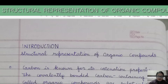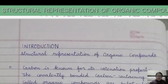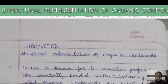As per schedule, we are going to start our next topic: structural representation of organic compounds. What are organic compounds, how to find hybridization of carbon atoms, and how to determine the number of sigma and pi bonds — these have already been covered in three uploaded lectures. This is lecture number four, in which we will learn about the structural representation of organic compounds.